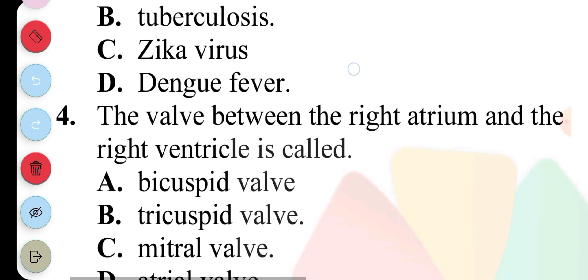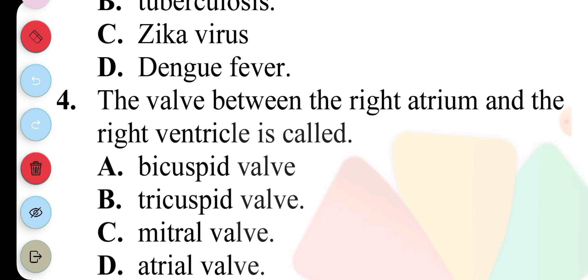Question 4: The valve between the right atrium and the right ventricle is called A. Bicuspid valve, B. Tricuspid valve, C. Mitral valve, D. Atrial valve. The answer to question 4 is A, Bicuspid valve.